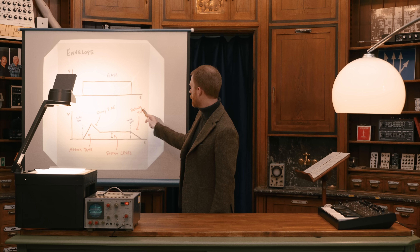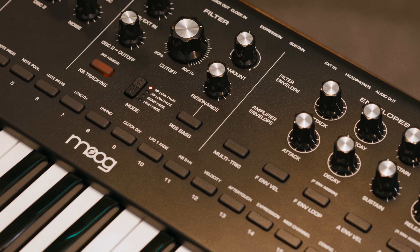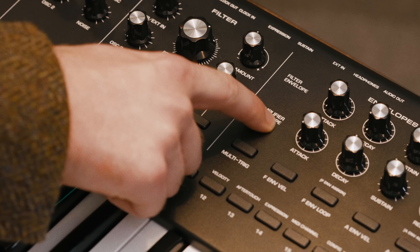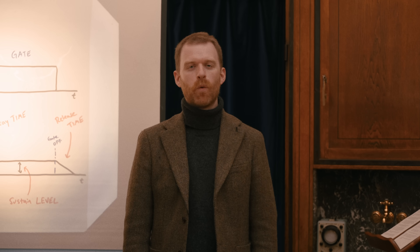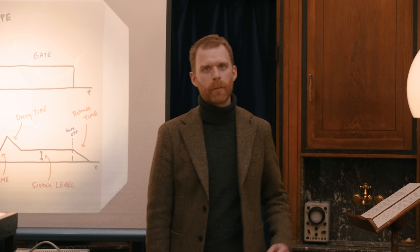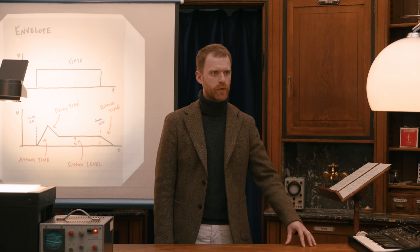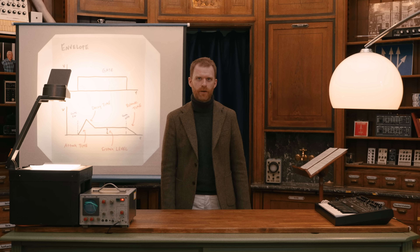Finally, release sets the amount of time it takes for a note to decay from the sustain level to zero volts when a key is released, adding a ringing tail to our notes. Synthesizers such as the Messenger or the Minimo typically have two separate envelopes — one to control the amplitude and another to control the filter. We'll talk about filter envelopes more in an upcoming lecture when we discuss filters, but having two separate envelopes gives you the ability to program a lot of nuance into your sound.